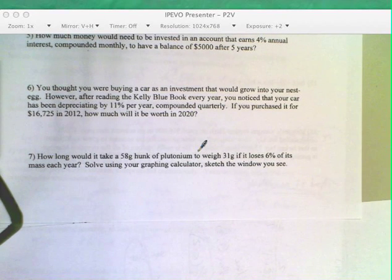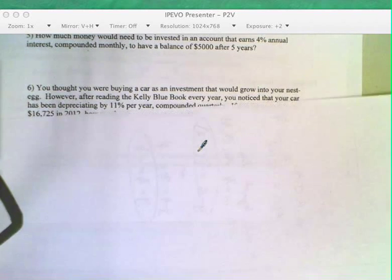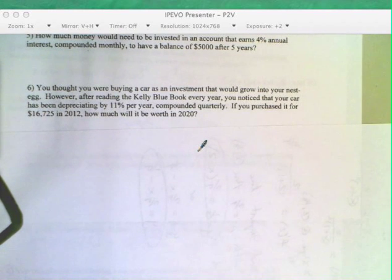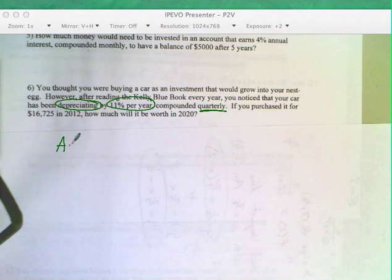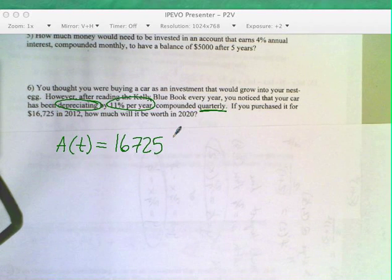So first of all, buying a car as an investment and the car deprecating, important word, meaning it goes down in value by 11% per year. Compounded quarterly, also important. So those are some important things. So first of all, when you see quarterly, you got your principal times 1 plus your interest rate over N. But if it's going down in value, you need negative or you make that a minus right there.